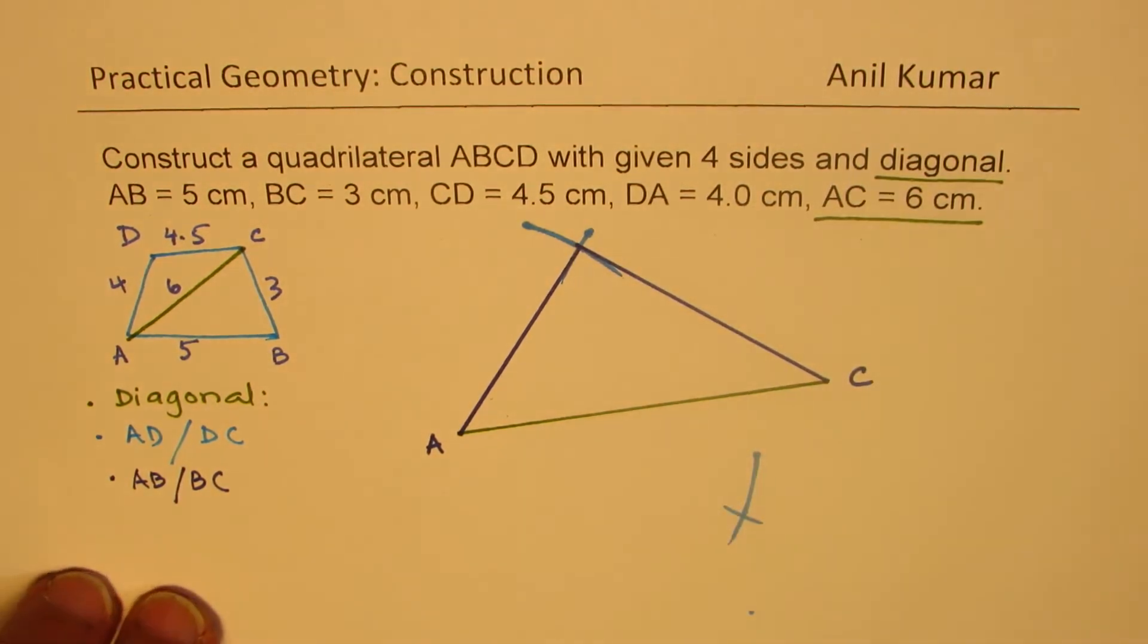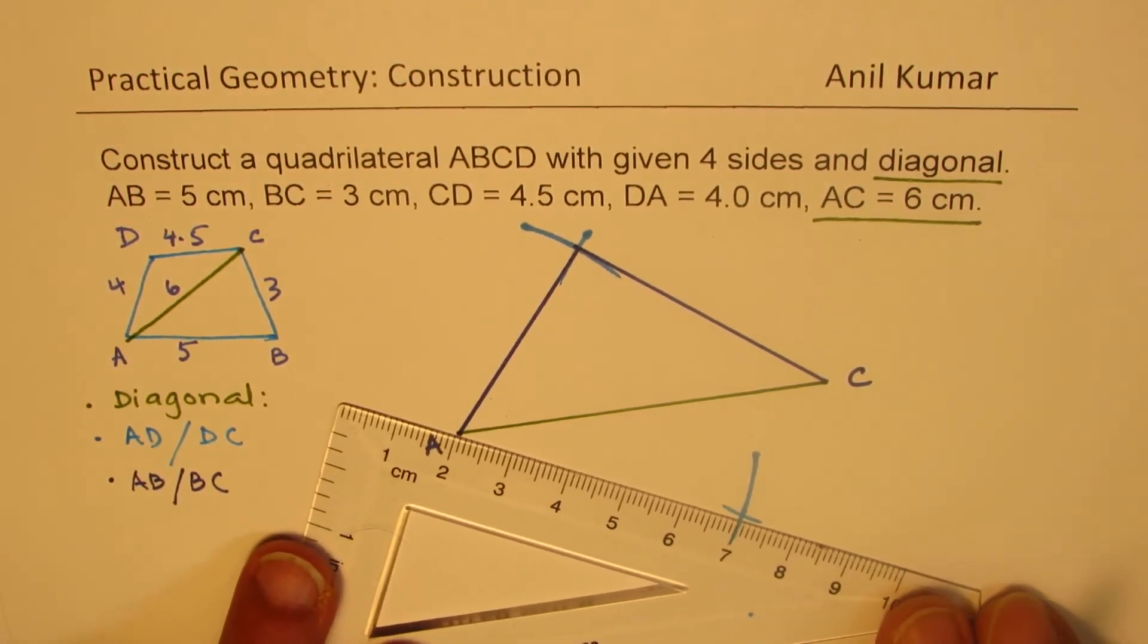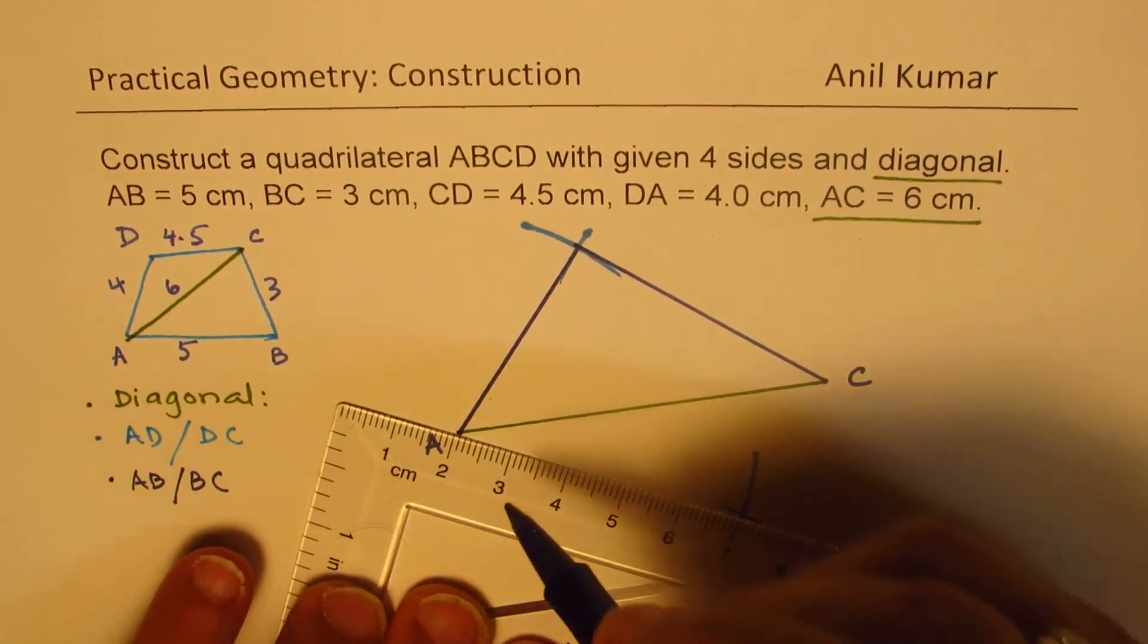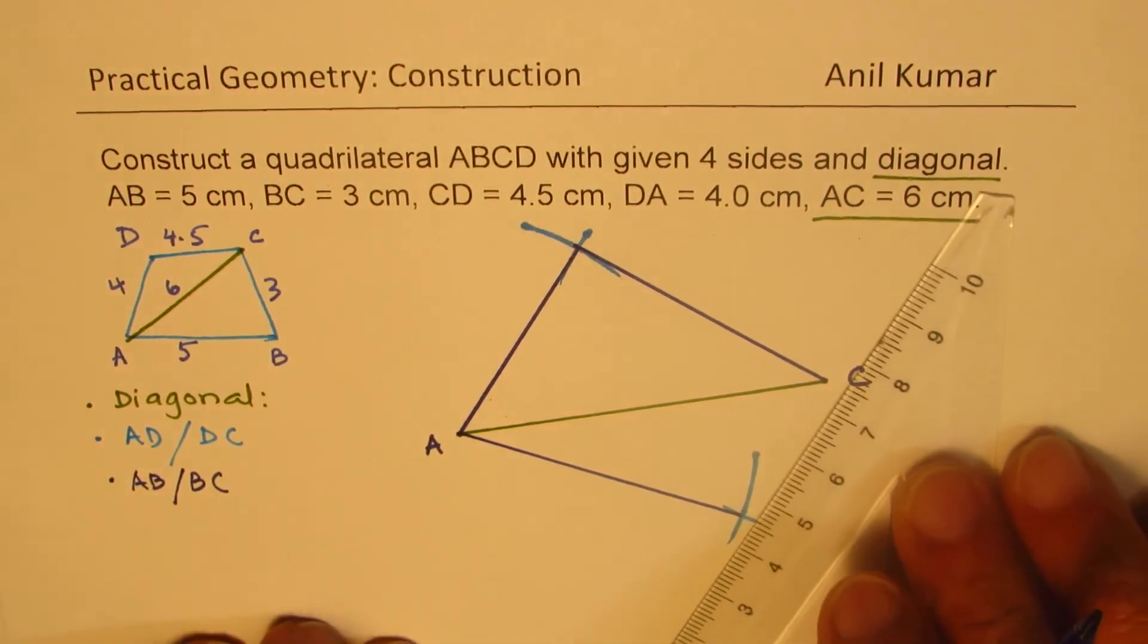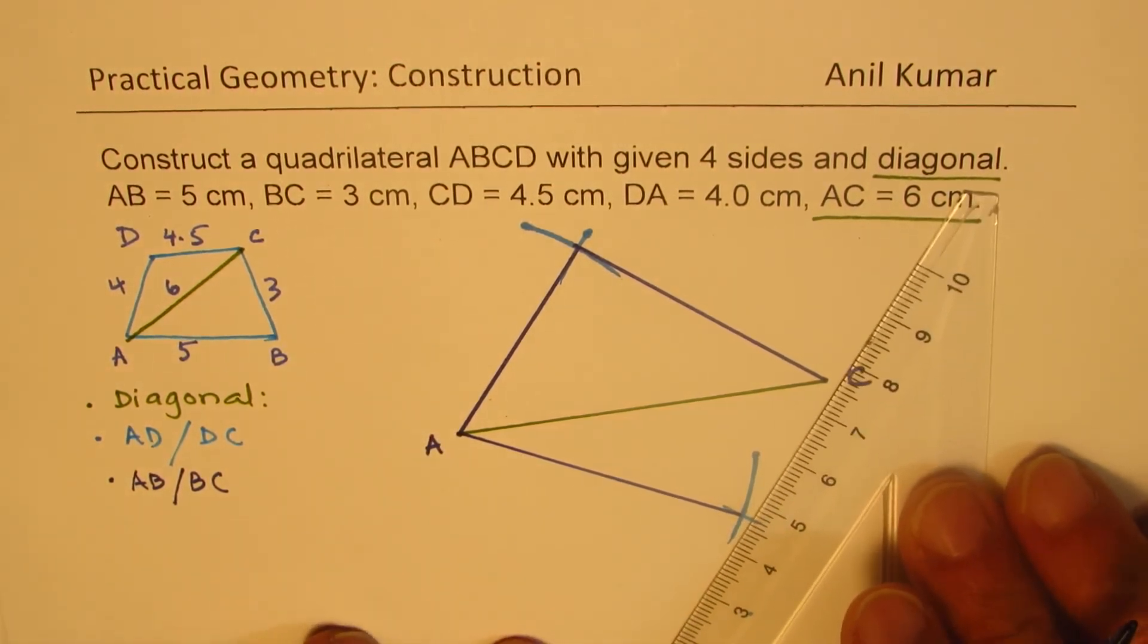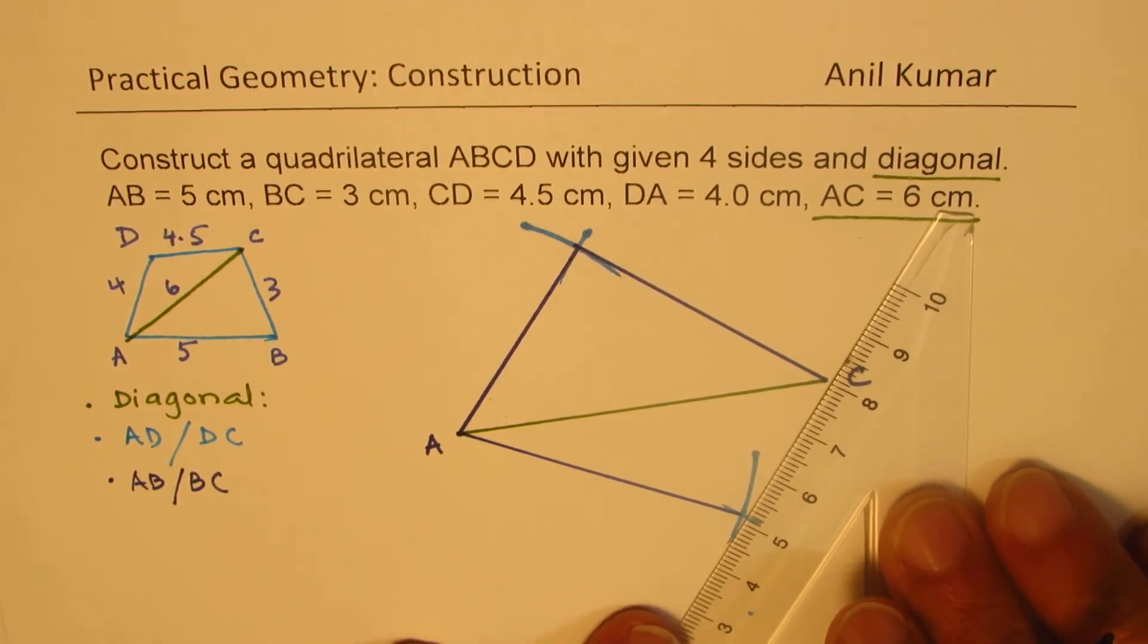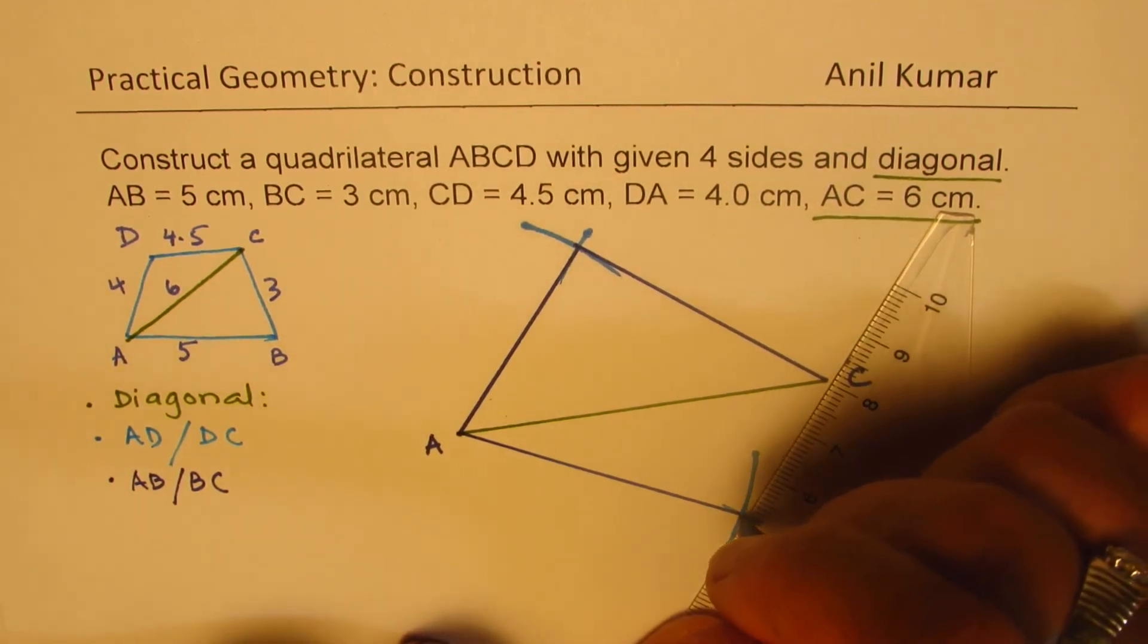You get the point of intersection and join this point of intersection with the vertices A and C. As you can see this is exactly 5 centimeters from 2 to 7, and then from this point to C it should be 3 centimeters which is from 5 to 8. So that is how you are going to construct your quadrilateral.